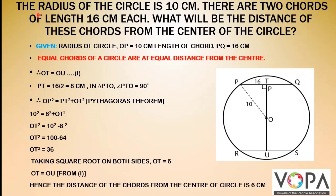Now let us solve a problem based on this theorem. The radius of the circle is 10 centimeters. There are two chords of length 16 centimeters each. What will be the distance of these chords from the center of the circle? Given: radius OP equals 10 centimeters, length of chord PQ equals 16 centimeters.